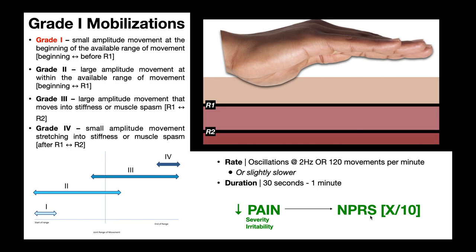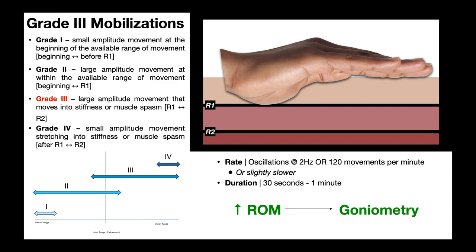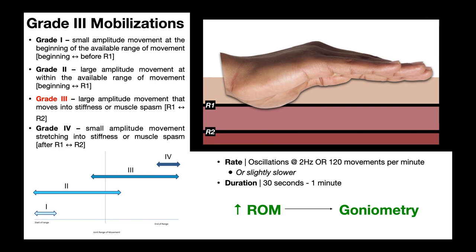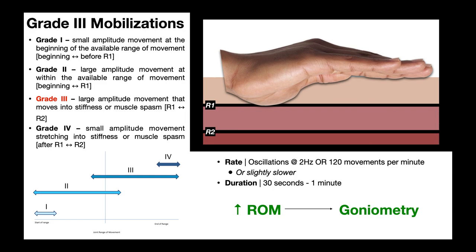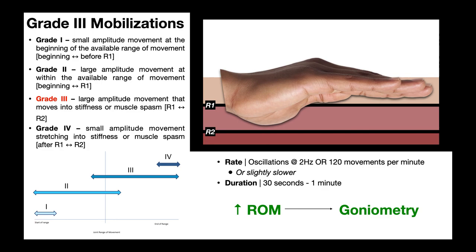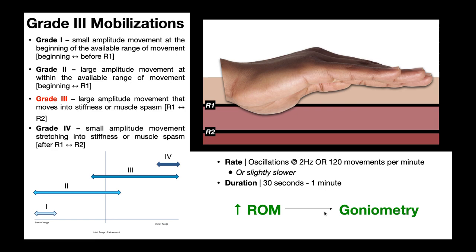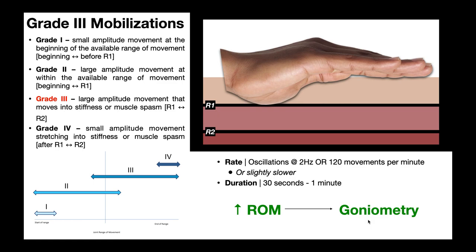In contrast, grades three and four mobilizations are best for increasing range of motion, which makes sense — we're starting already at R1, where we've taken the slack out of the tissue, and then stretching it to R2 near the end range of the movement. By stretching past R1, we're helping to loosen the collagen fibers and other things within the tissue itself. You'd do a pre and post test using goniometry before and after the mobilization to assess range of motion objectively.